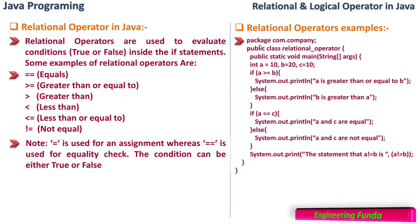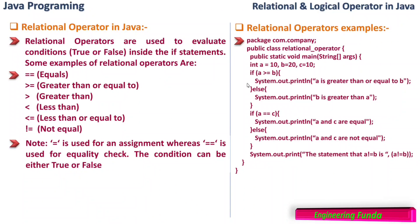Here is an example — a Java program with public class RelationalOperator, giving us a demonstration of the relational operators. We have public static void main, and we have declared three integer variables a, b, and c, initialized as follows: a is equal to 10, b is equal to 20.